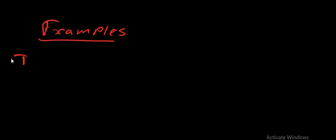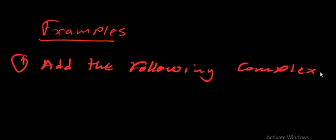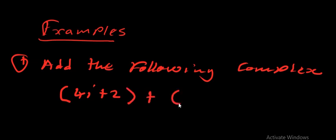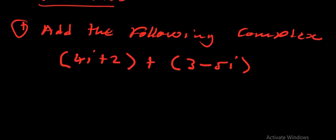The first example will be: add the following complex numbers. The first one will be (4i + 2) plus (3 minus 5i). The 'i' in this notation simply means that it is an imaginary number.